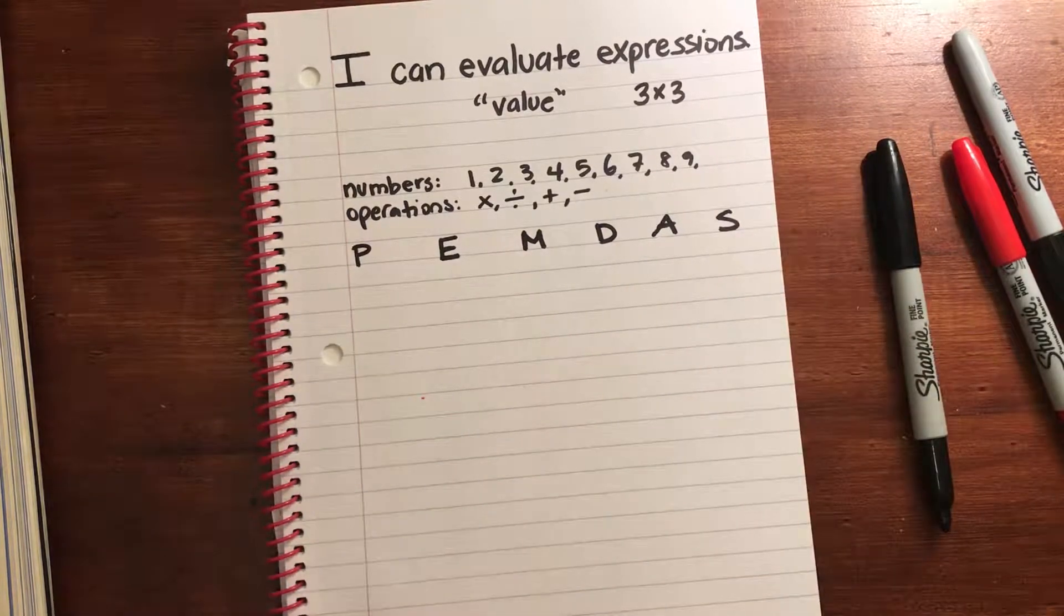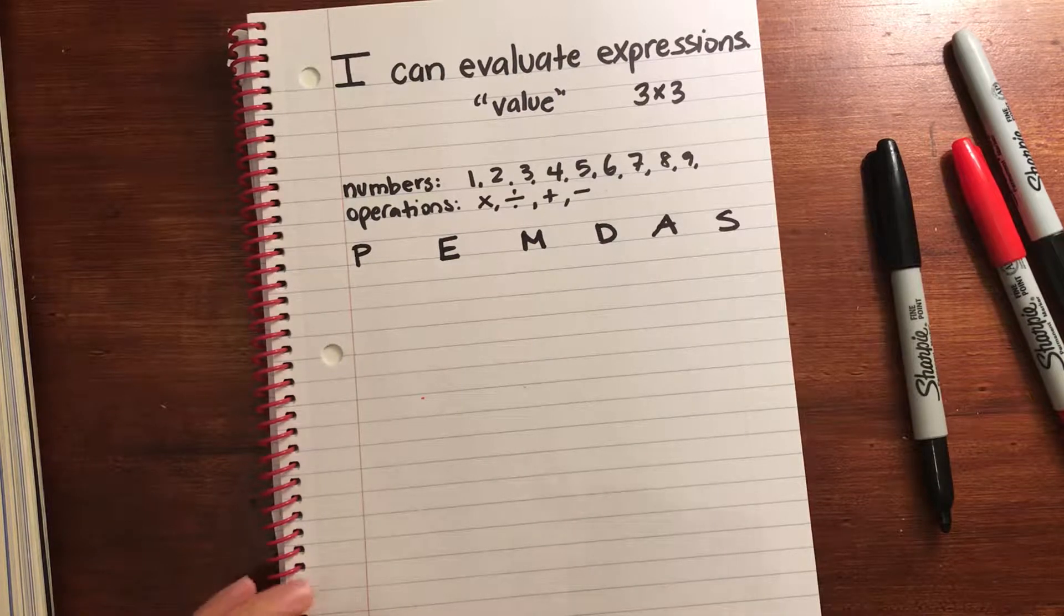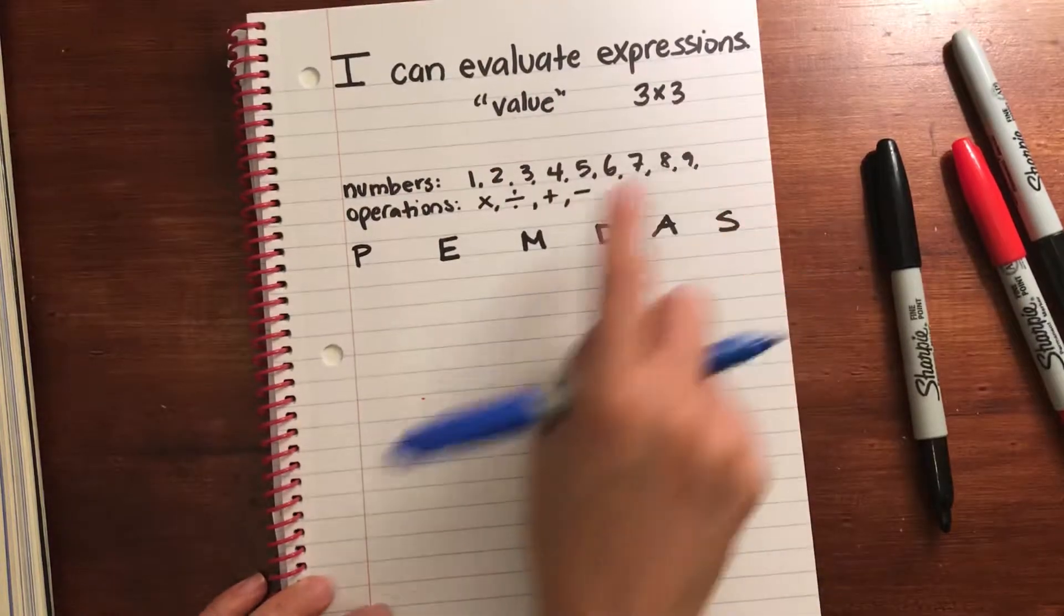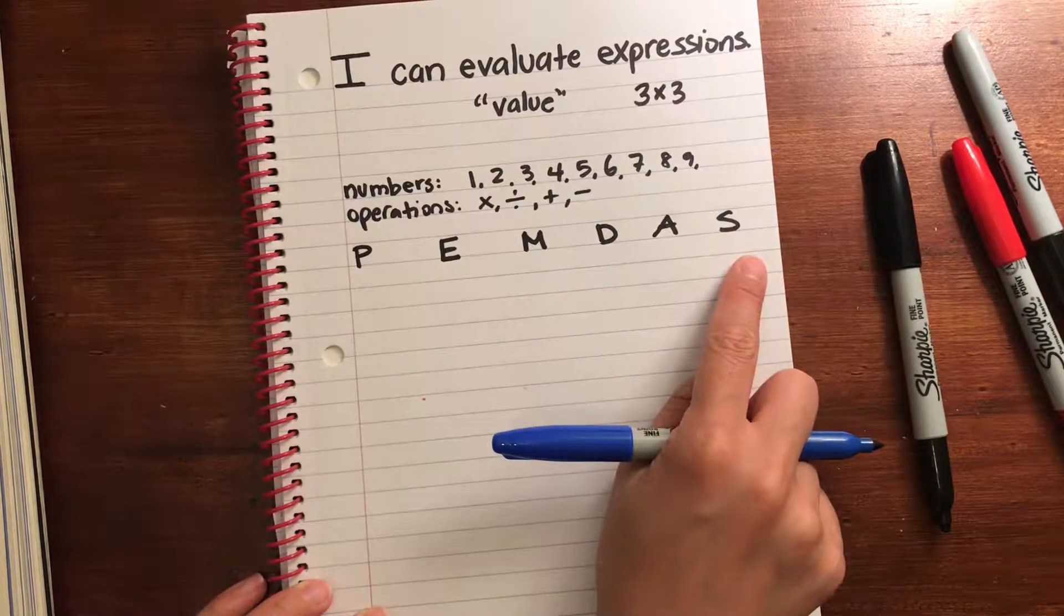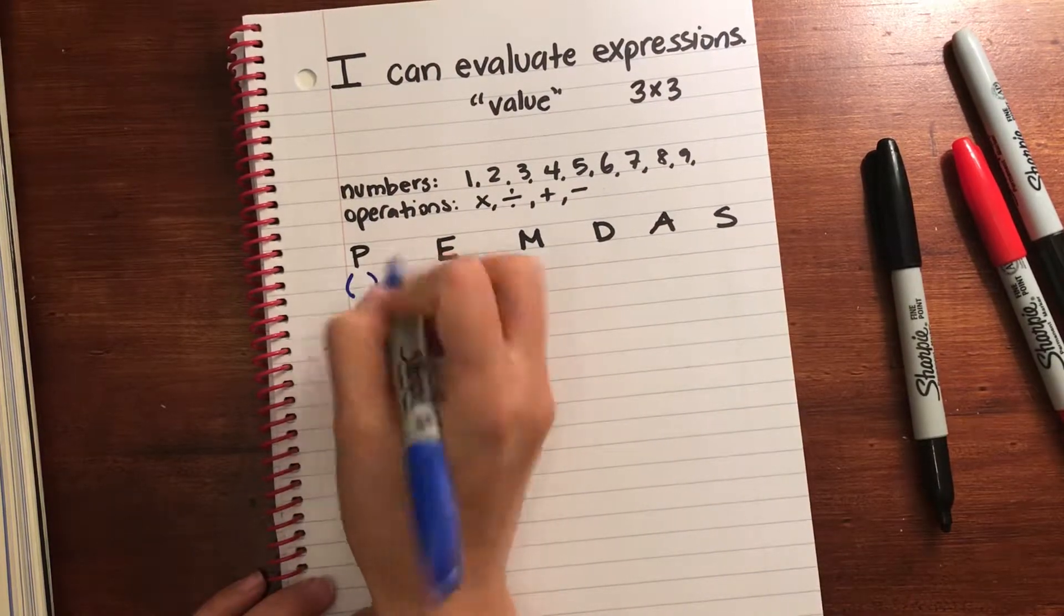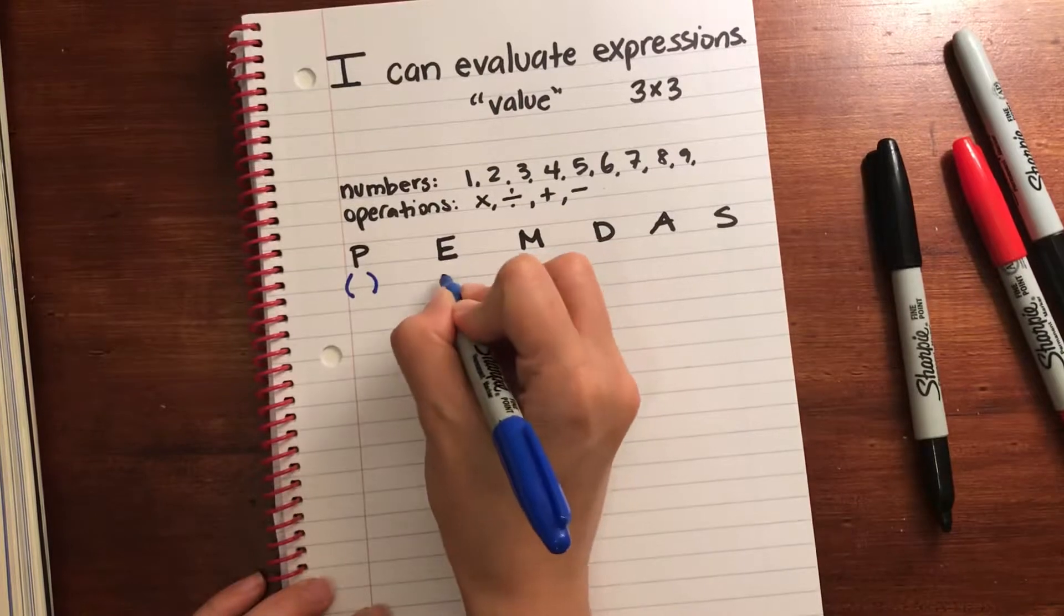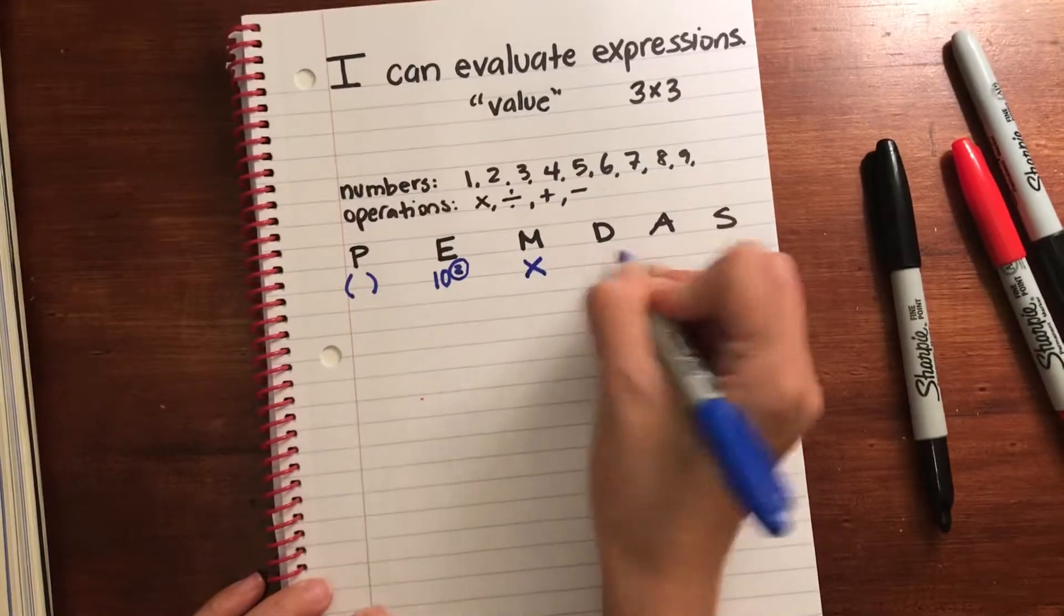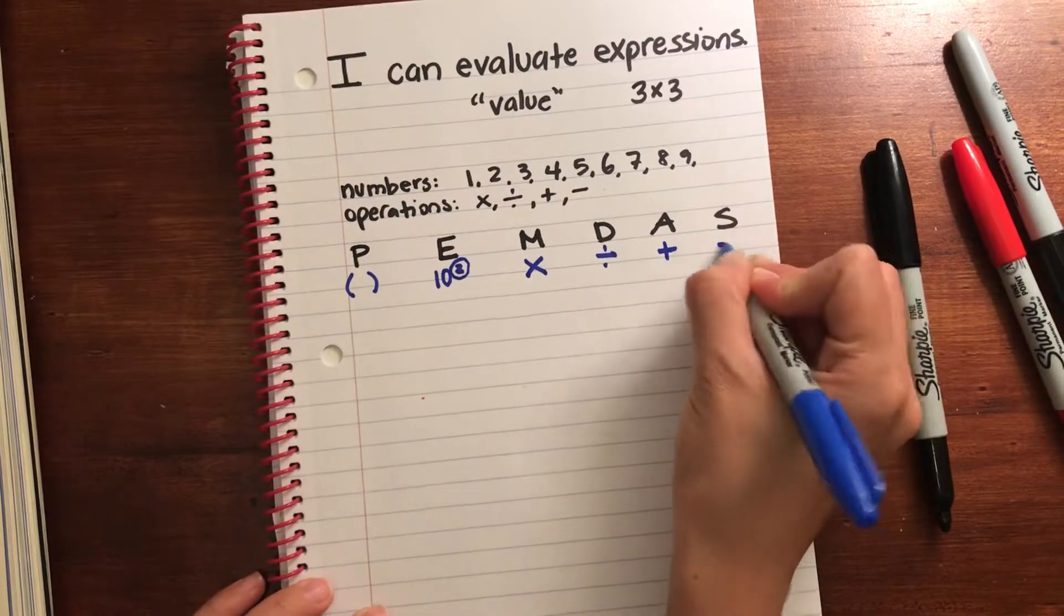It's not really what it means, it's just a mnemonic to remember how to solve expressions, when we find the value of expressions. We have this order, and this order helps us remember. So we have parentheses first, then exponents, multiplication, division, addition, subtraction.